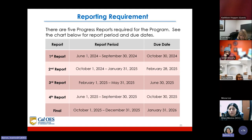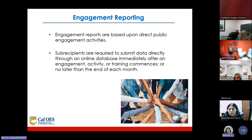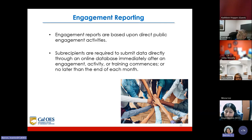There are five progress reports required for the program. See the chart for report periods and due dates. Reports are in increments of approximately four months, with due dates at the end of the following month. The first report covers June 1st through September 30th, with a due date of October 30th. Regarding engagement reporting, subrecipients are required to submit data directly through an online database immediately after an engagement activity or training commences, or no later than the end of each month.